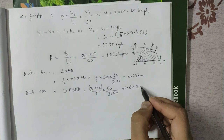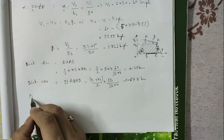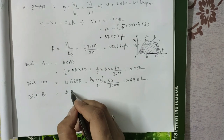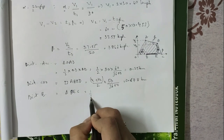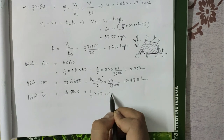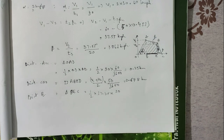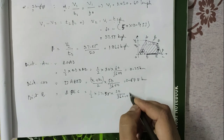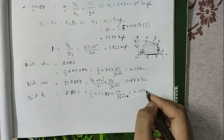The distance during braking corresponds to triangle BEC on the speed-time curve. Distance = ½ × V2 × T3 / 3600 = ½ × 37.55 × 20 / 3600 = 0.1042 km. So the braking distance is approximately 0.1035 km.